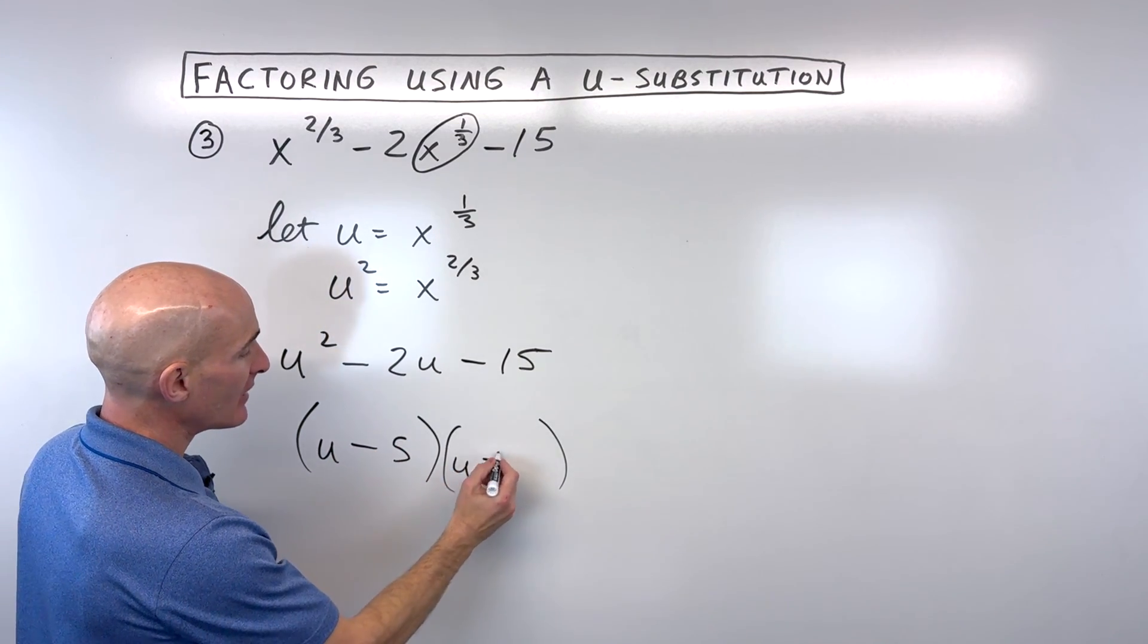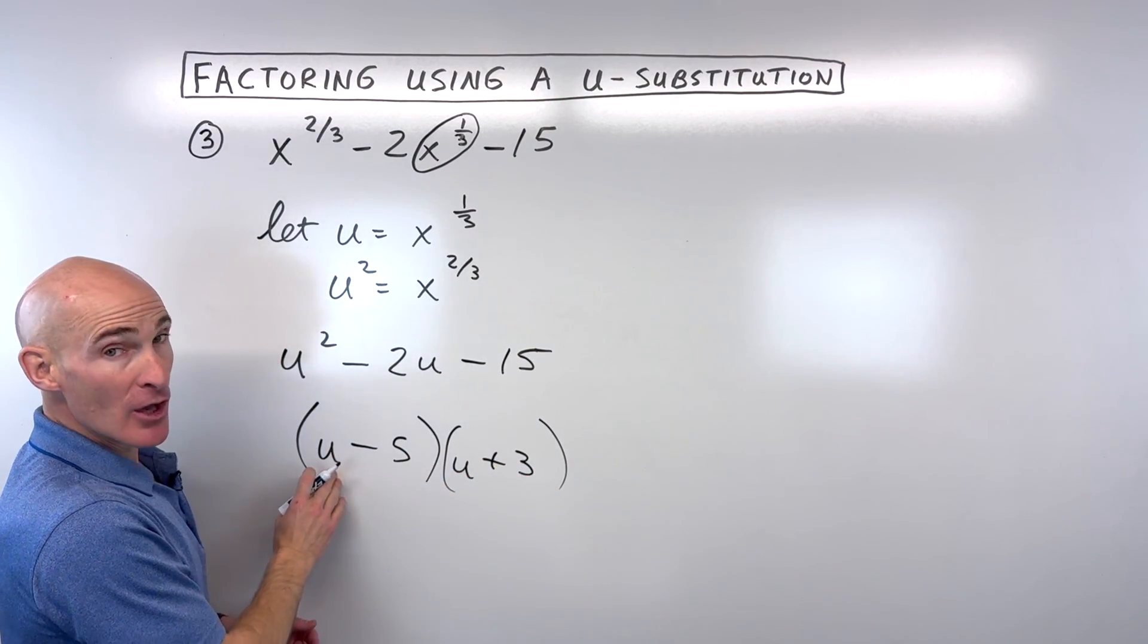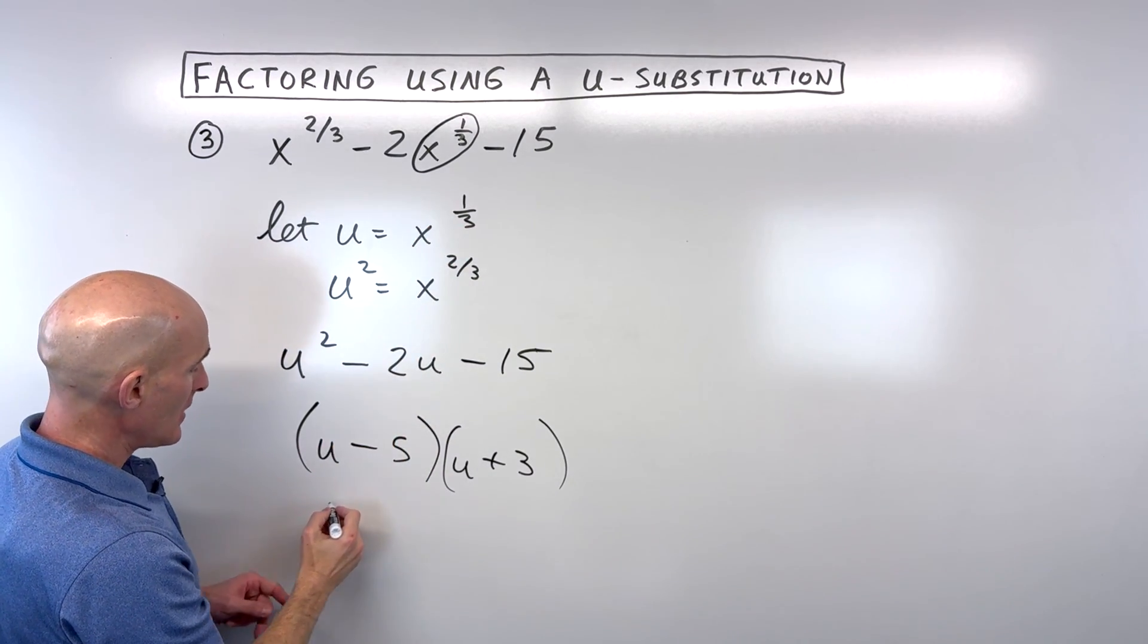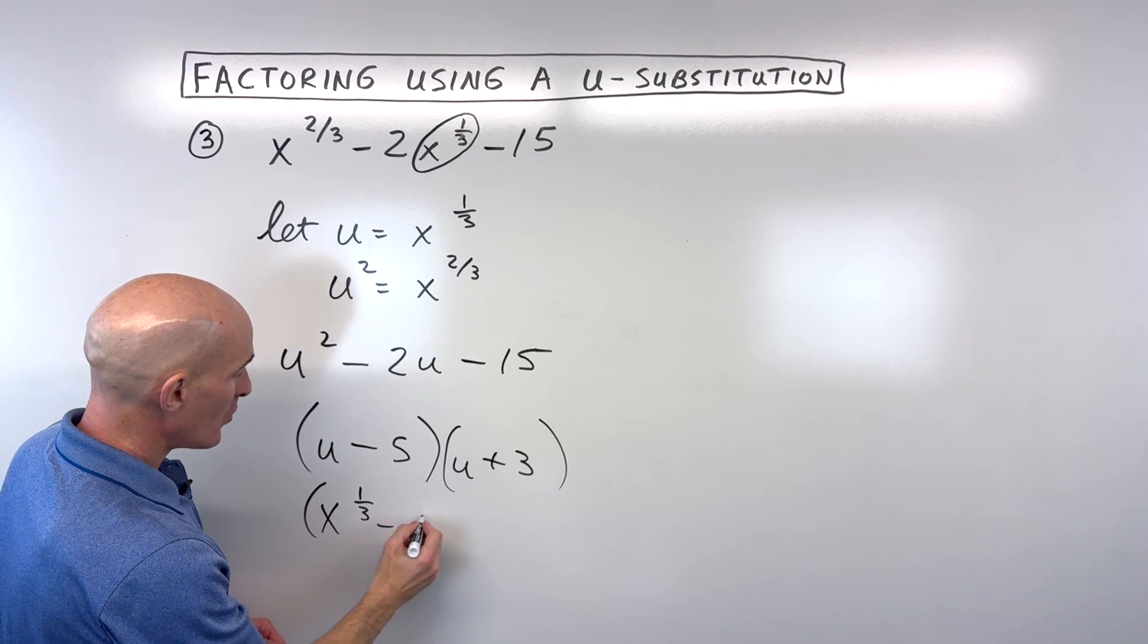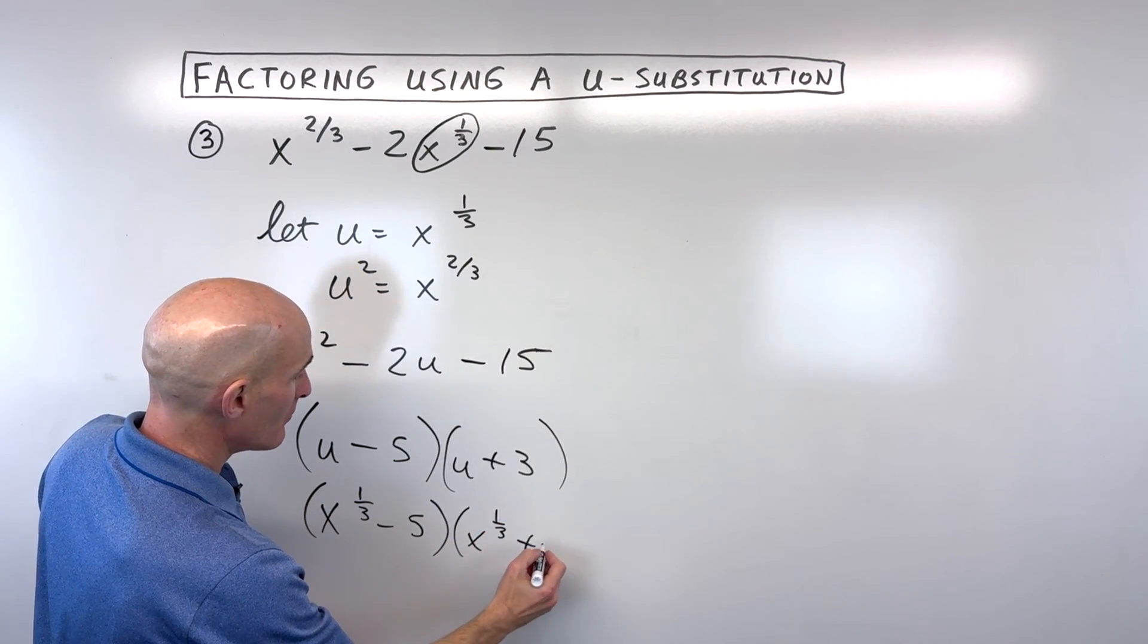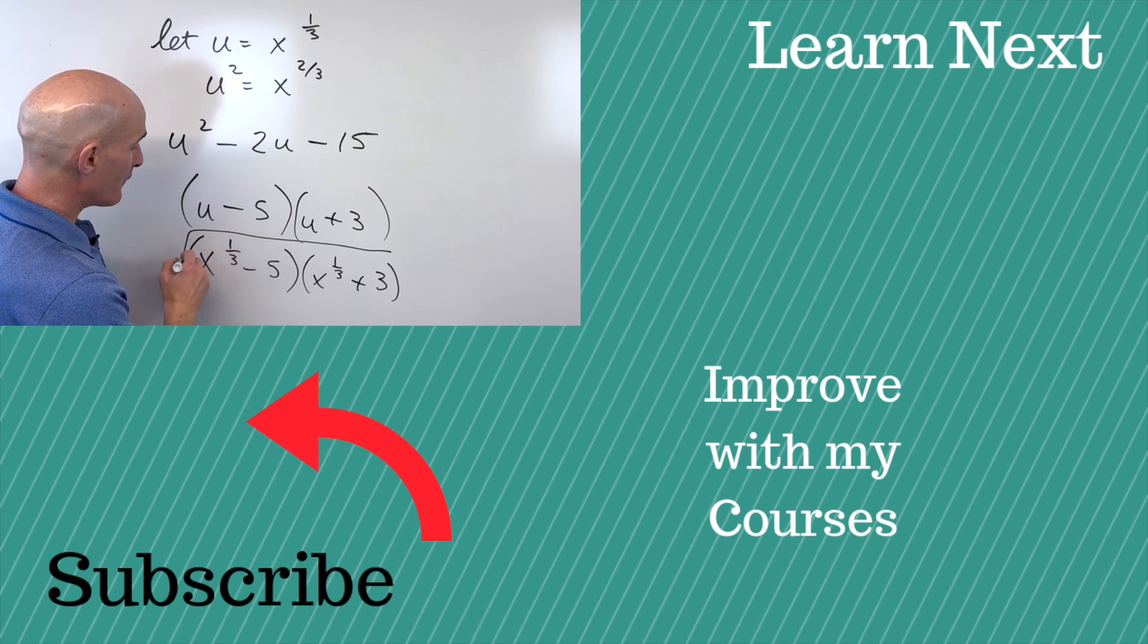That's going to be negative 5 and positive 3. Now we want to go back to our original variable. So since u is equal to x to the one-third, let's go ahead and replace that. So x to the one-third minus 5, x to the one-third plus 3. And you've got it fully factored.